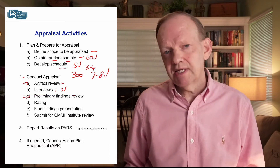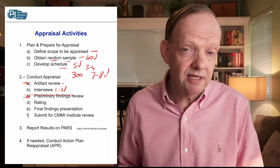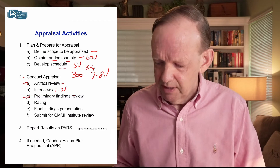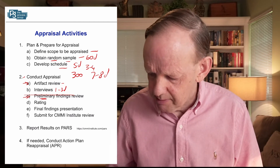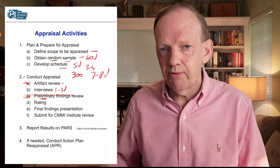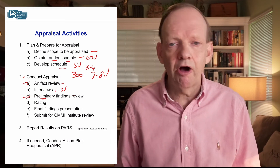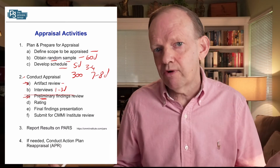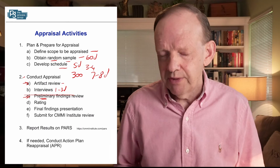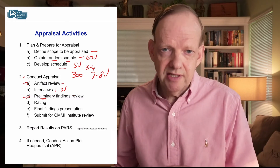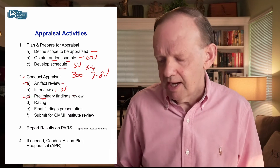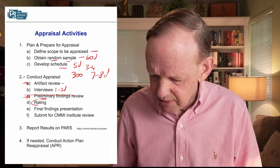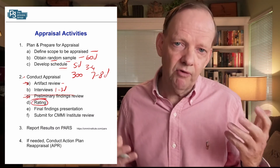After the interviews, we put together findings — basically a summary PowerPoint listing what was done particularly well and where there may be gaps or weaknesses. The company then gets to critique that in a primary findings presentation. We show the organization a draft copy and ask: we think you said this — is that right? You can critique the appraisal team. After that the appraisal team does the rating: level 1, 2, 3, or whatever the target is.